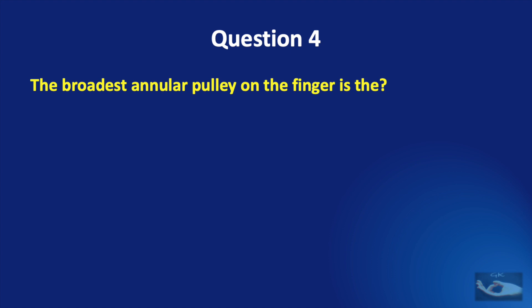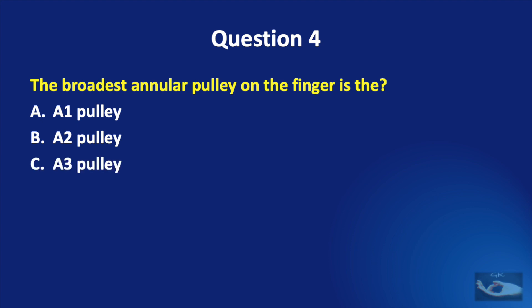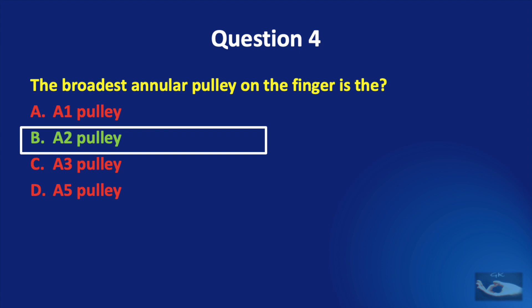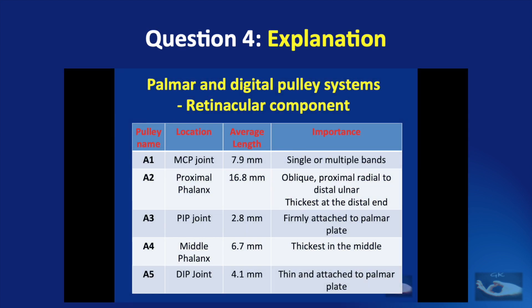Question number four: the broadest annular pulley on the finger is the A1 pulley, A2 pulley, A3 pulley, or A5 pulley? The correct answer is the A2 pulley. The A1 pulley is over the metacarpophalangeal joint with a length of about 7.9 mm. The A2 pulley over the proximal phalanx has an average length of 16.8 mm and is the most important pulley as far as the biomechanics of the tendons are concerned. The A3 pulley over the proximal interphalangeal joint has a length of about 2.8 mm, the A4 pulley over the middle phalanx has a length of 6.7 mm.